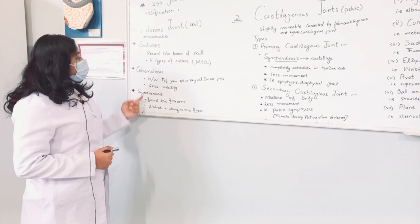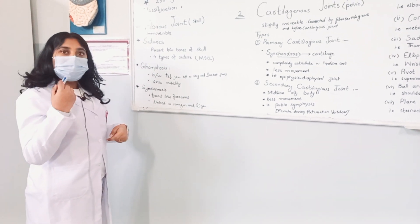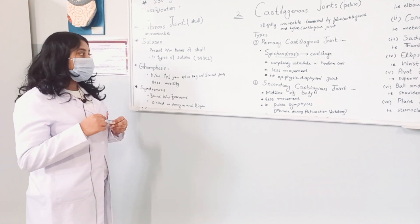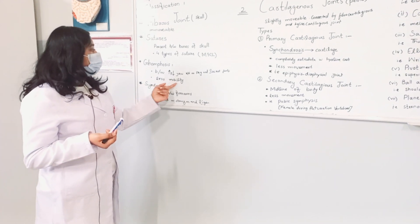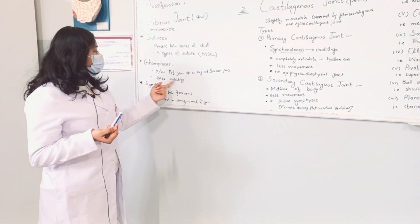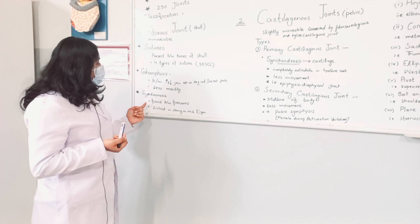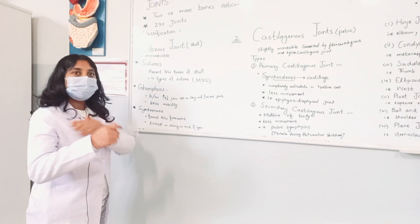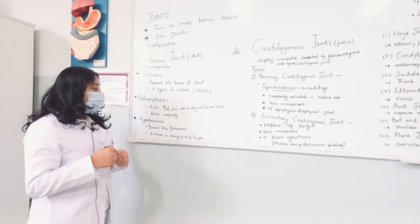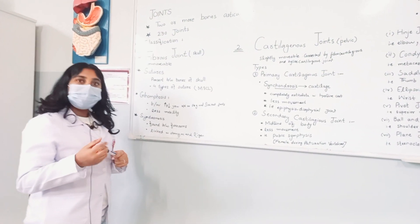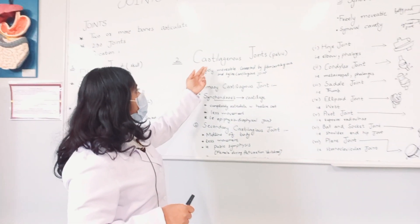Gomphosis is present between the lower and upper jaw and is known as a peg and socket joint. It has less mobility. Syndesmosis is found between the forearms, linked with strong membranes and ligaments.